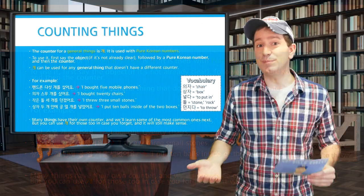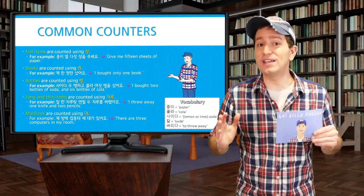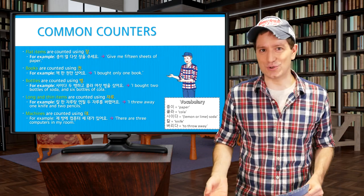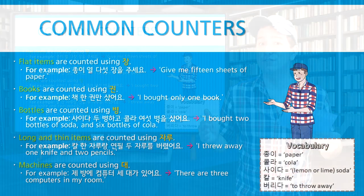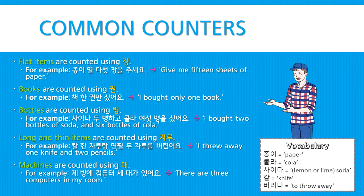So we've learned how to count people, animals, and general objects. Here are some other very common counters. 장 is for flat items — for example, 종이 열 다섯 장을 주세요 means give me fifteen sheets of paper. Books are counted using 권 — for example, 책 한 권만 샀어요 means I bought only one book. Bottles are counted using 병 — for example, 사이다 두 병하고 콜라 여섯 병을 샀어요 means I bought two bottles of soda and six bottles of cola.